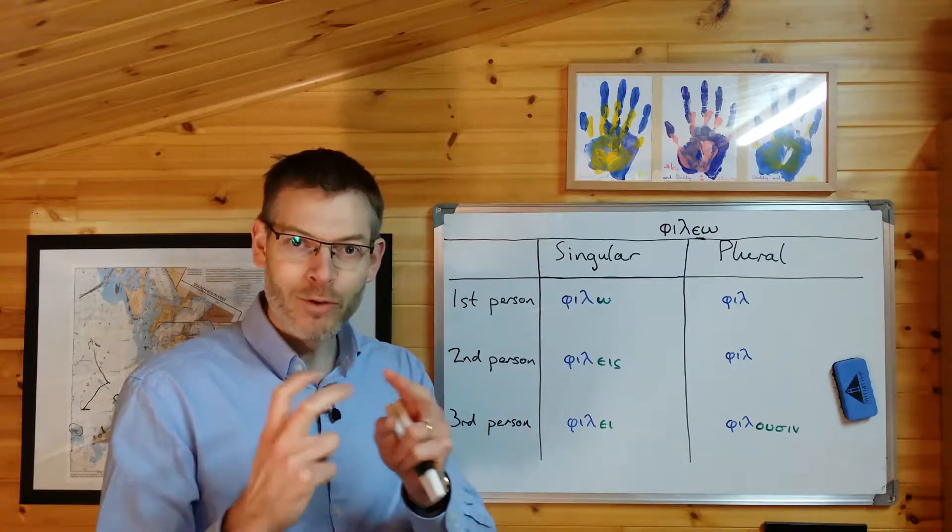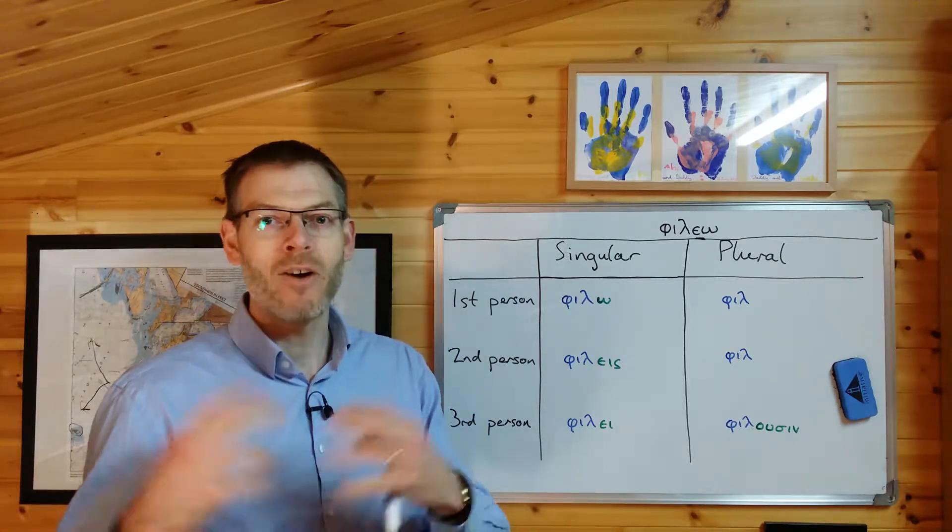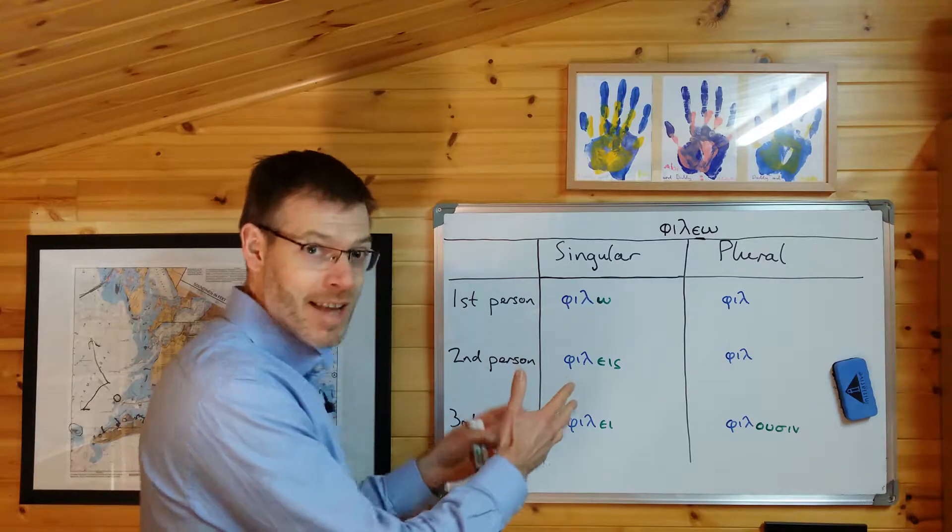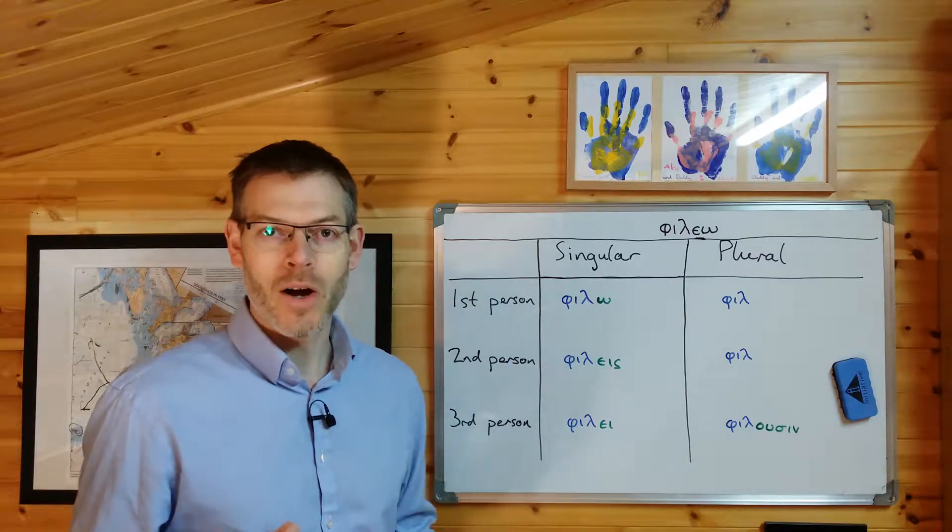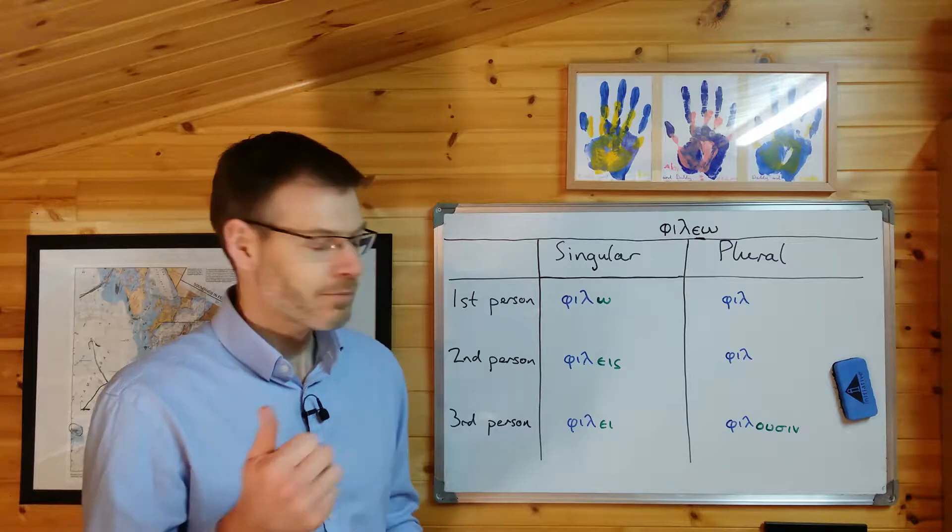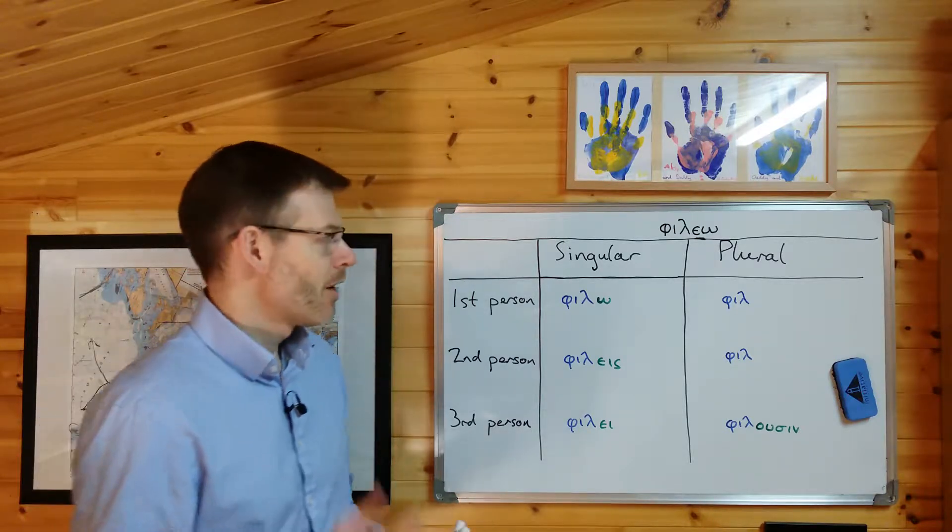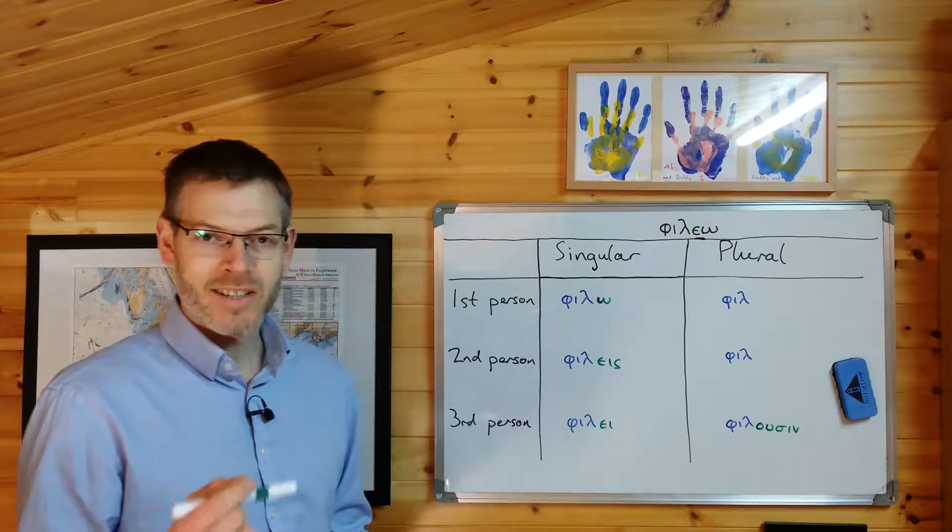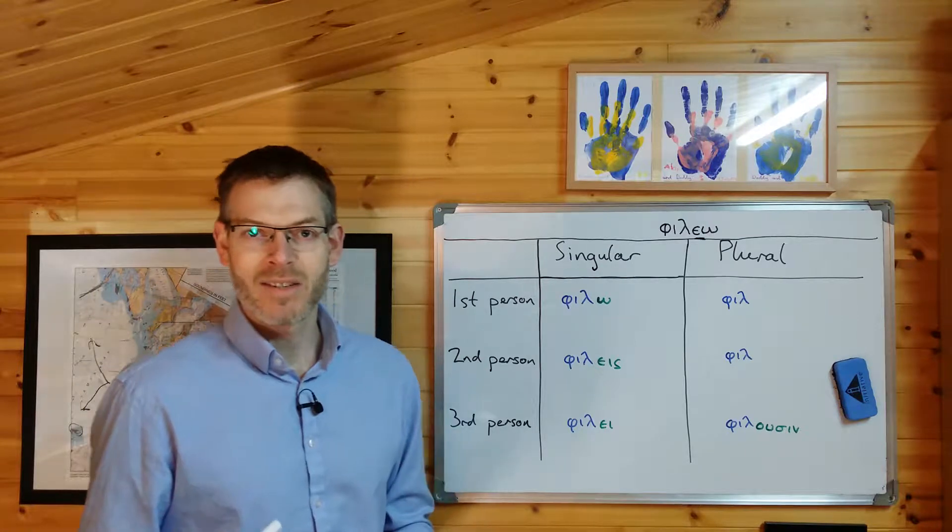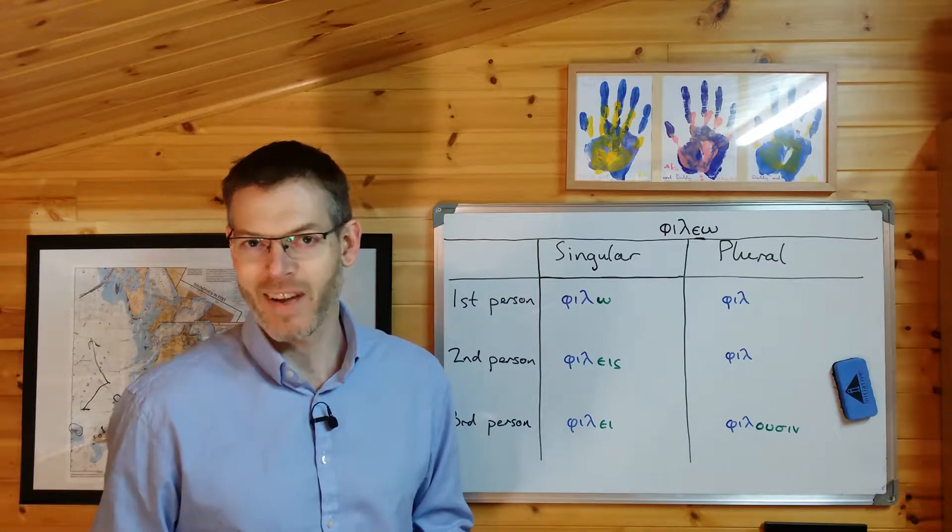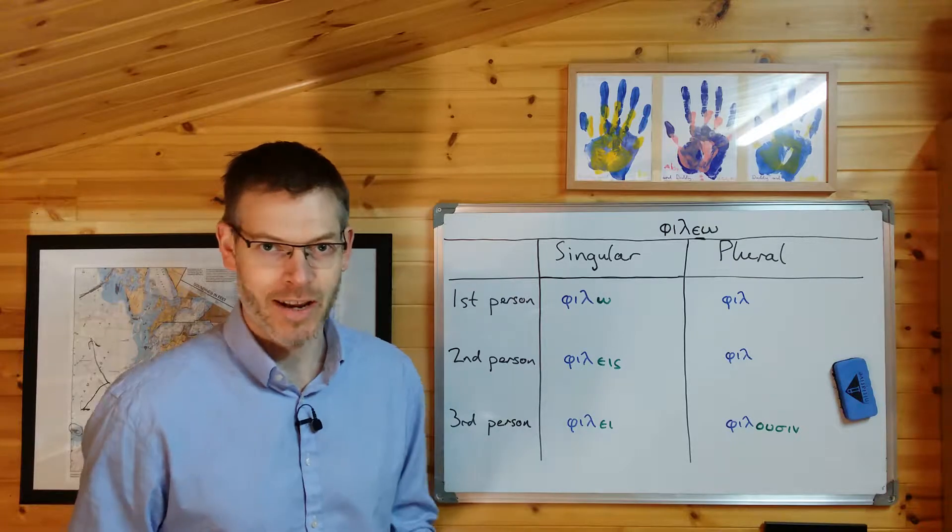And rather than trying to learn a whole new set of endings, it's much better if I can explain to you what's actually going on here so that you can understand why it's slightly different. And then just understanding that rule about the difference will then help you to generate these endings from the endings of λύω that you already know. Let me explain the difference. With λύω, the stem of the verb ends with an epsilon. A normal vowel letter. Doesn't do anything strange.